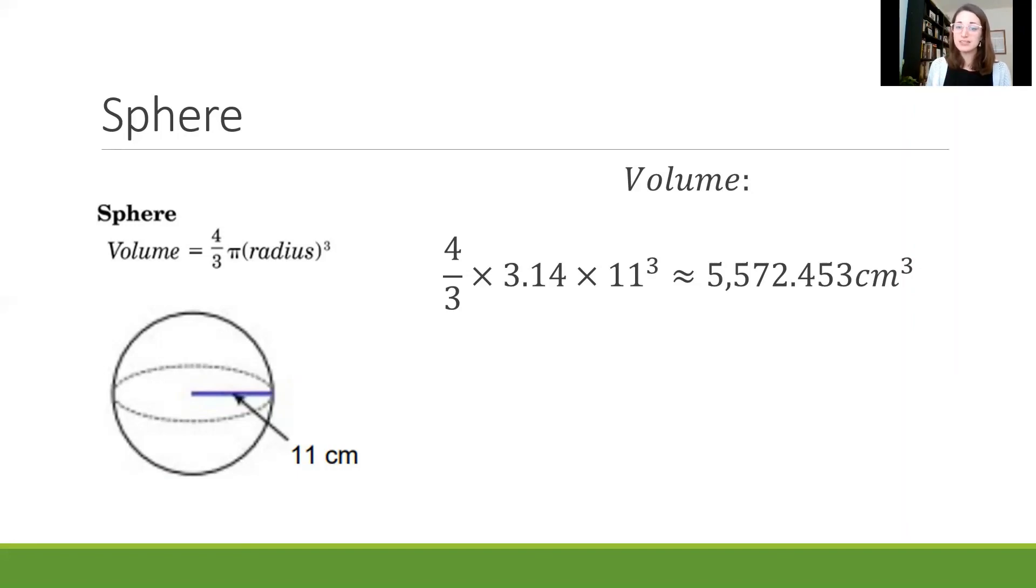So when I put all those things together and multiply them, you'll be able to plug these into a calculator so it'll be nice and easy to make sure you get all the right information quickly. I'm going to get 5572.453 centimeters cubed and again that's an approximation, I have rounded it to the nearest thousandth value.